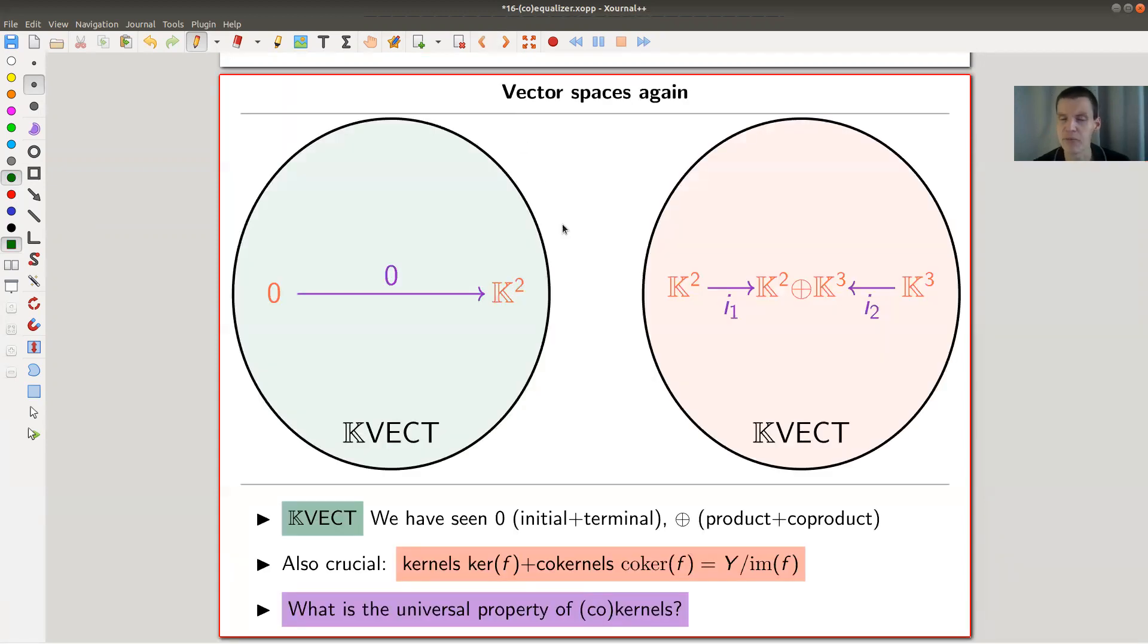In this whole setup of limits and universal properties, my main category example is always vect because it's the nicest one out there. Vector spaces are the best category in this sense, really well behaved. You could think of k vector spaces as the standard category, and if a category lacks certain products, limits, or direct sums, then it measures how far you are away from vector spaces. That's my motivation for always looking at vector spaces.